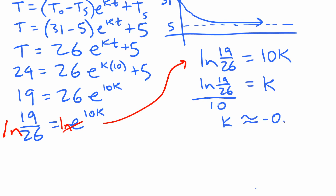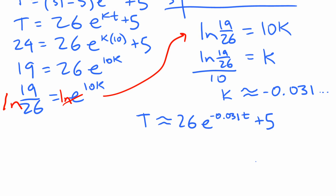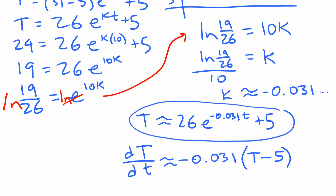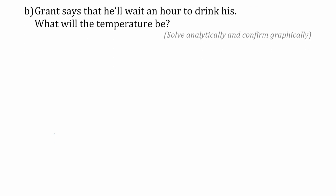So K is roughly −0.031, and we can substitute it into our equation to write T ≈ 26e^(−0.031t) + 5. We can also write the original differential equation as dT/dt ≈ −0.031(T − 5), with the K value substituted in. These are two different equations representing the same situation.